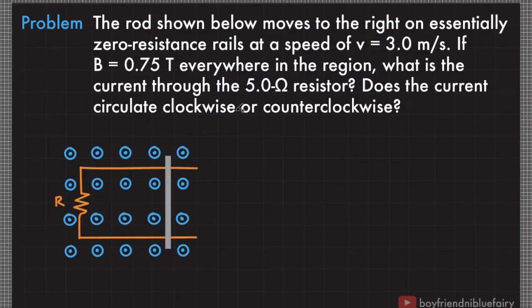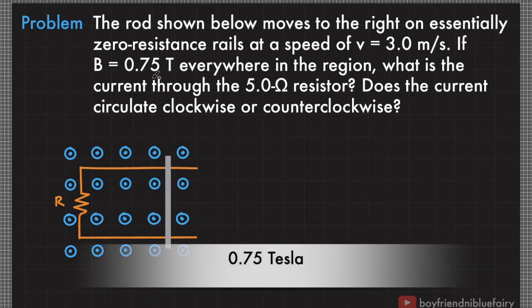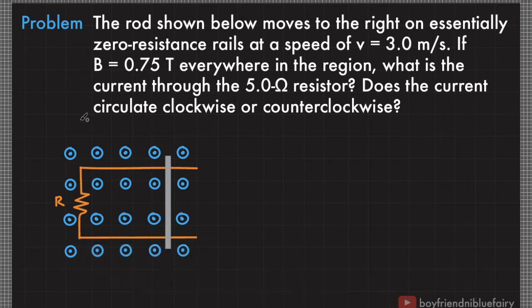To demonstrate how to calculate motional EMF, let's consider this problem. This problem is from OpenStax University Physics Volume 2, Chapter 13, Electromagnetic Induction, Problem 45. The rod shown below moves to the right on essentially zero resistance rails at a speed of V equals 3 meters per second. If the magnetic field B equals 0.75 Tesla everywhere in the region, what is the current through the 5 ohm resistor? Does the current circulate clockwise or counterclockwise?